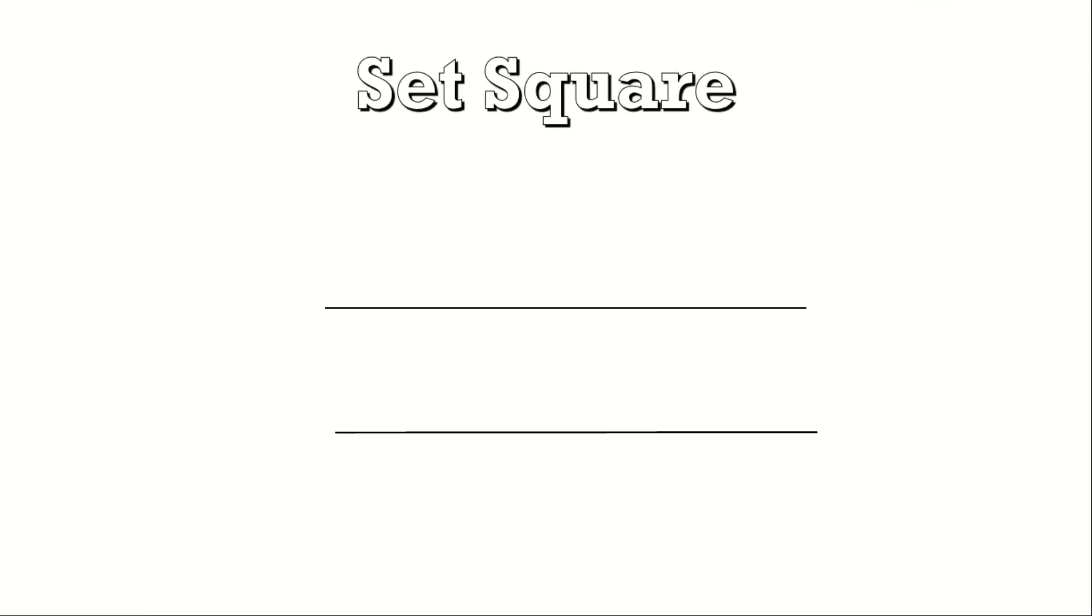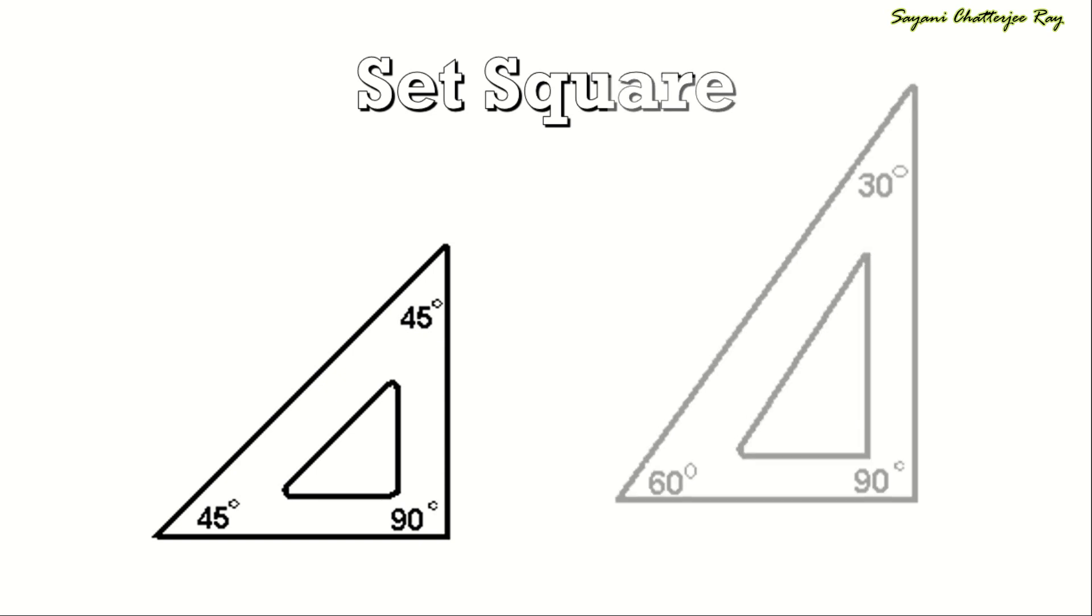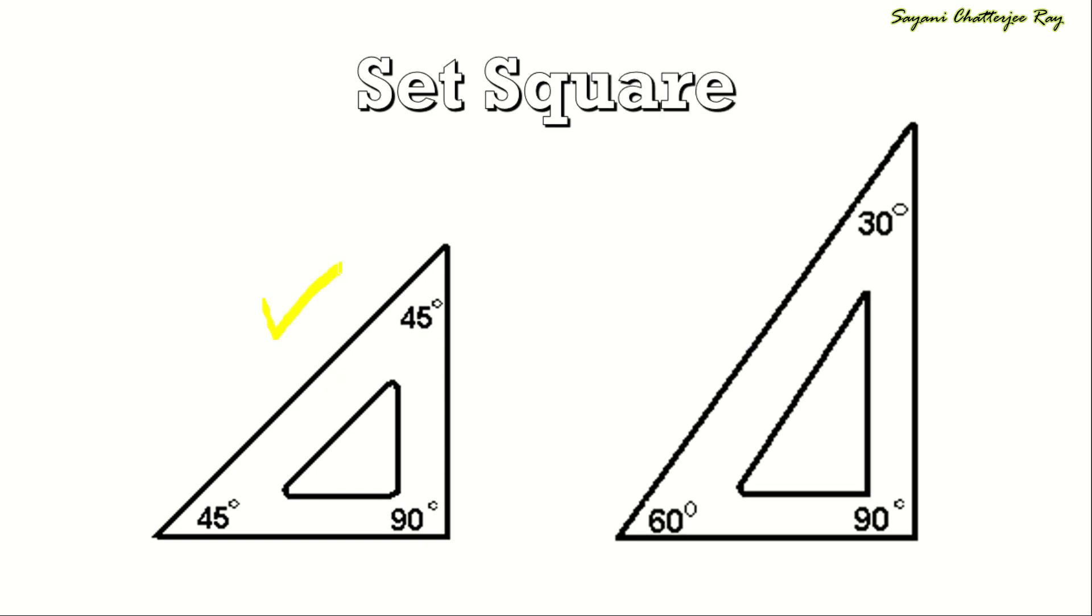For drawing parallel lines, we need set squares. There are two types: a 45-45-90 set square and a 30-60-90 set square. In combination with the T-square, lines at 30 degree or 60 degree angle with vertical or horizontal lines can be drawn with 30-60-90 set square, and 45 degree lines with a 45 degree set square.